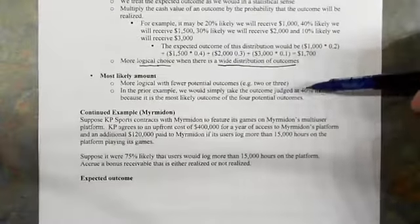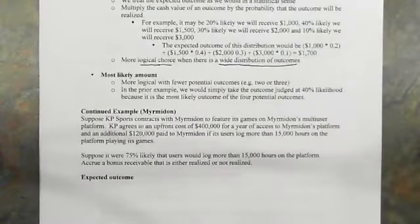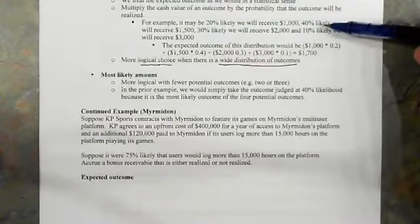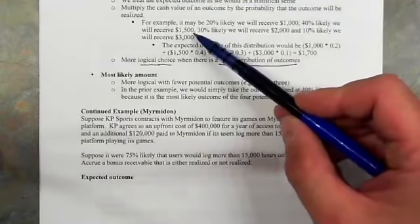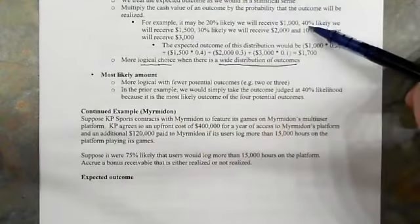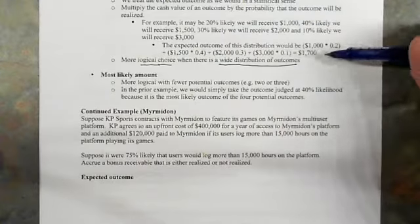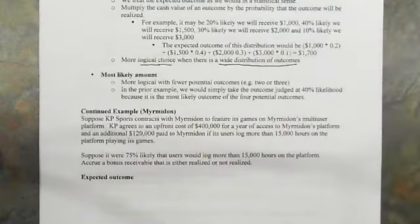The most likely amount is more logical with fewer potential outcomes — maybe just two or three outcomes. Then we simply take whichever is most likely to occur. In the above example, the most likely outcome was $1,500 because it was 40% likely. So in that case we take the $1,500 rather than $1,700 as the variable consideration amount we would record.